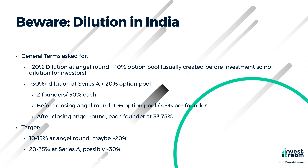I would recommend trying to push dilution a little bit lower. A ten percent option pool is common — if you can push it to five percent, even better. At the Series A, you'll likely dilute close to thirty percent, probably in the twenty-five to thirty percent range. Many Series A investors will ask you to top up your existing option pool to a total of twenty percent so there's enough to hire senior executives and broaden your team. We're seeing more companies raising at least two rounds before getting to a Series A, so try to push early-stage dilution down to ten to fifteen percent per round.